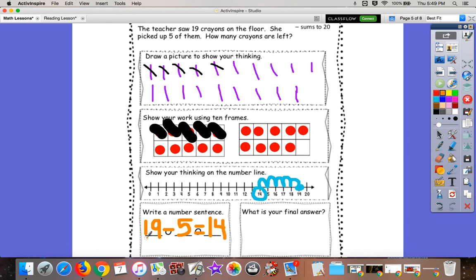Let's read that together. 19 subtract or take away five equals 14. So what is our final answer? 14. And we showed our work in many different ways. Good job, boys and girls.